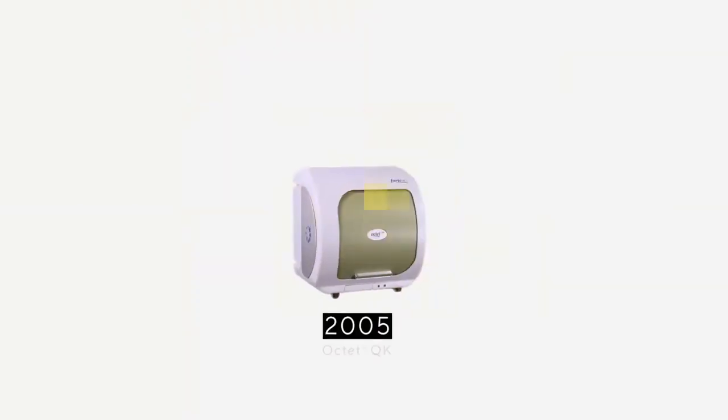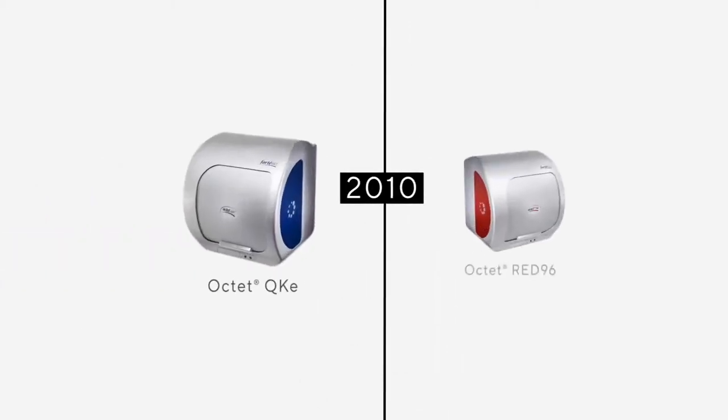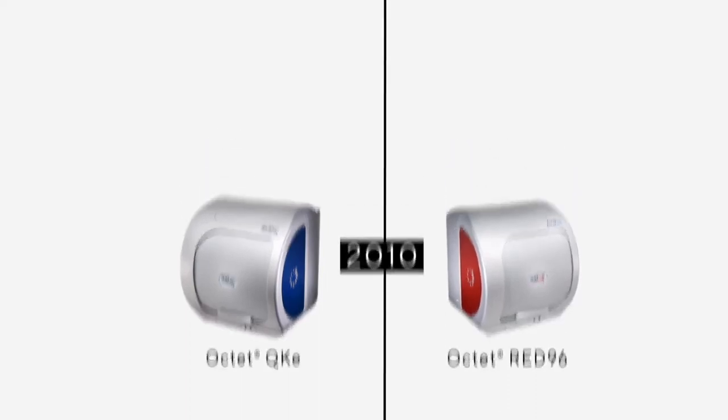Science is continuously evolving, and so is the Octet BioLayer Interferometry System. BioLayer Interferometry Technology, or BLI, has been providing researchers with a label-free approach to monitoring biomolecular interactions for over 15 years.